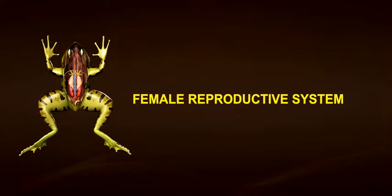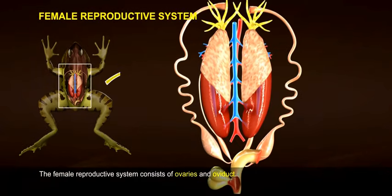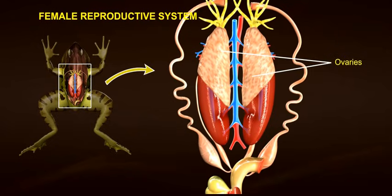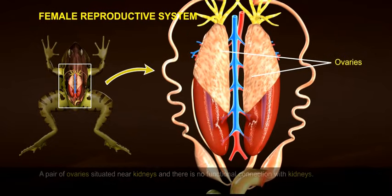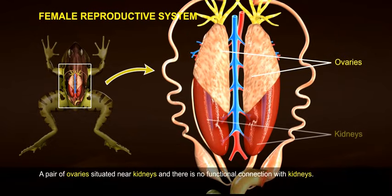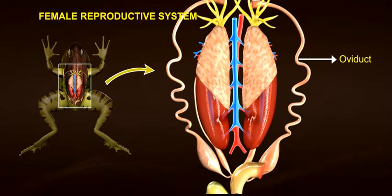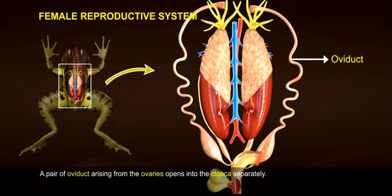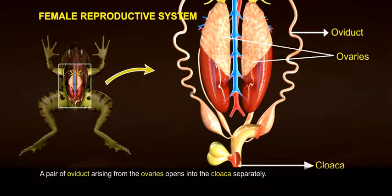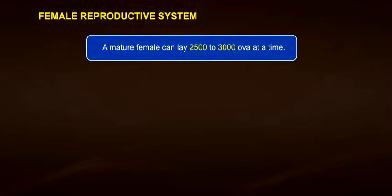Female reproductive system. The female reproductive system consists of ovaries and oviduct. A pair of ovaries is situated near the kidneys with no functional connection to them. A pair of oviducts arising from the ovaries opens into the cloaca separately. A mature female can lay 2500 to 3000 ova at a time.